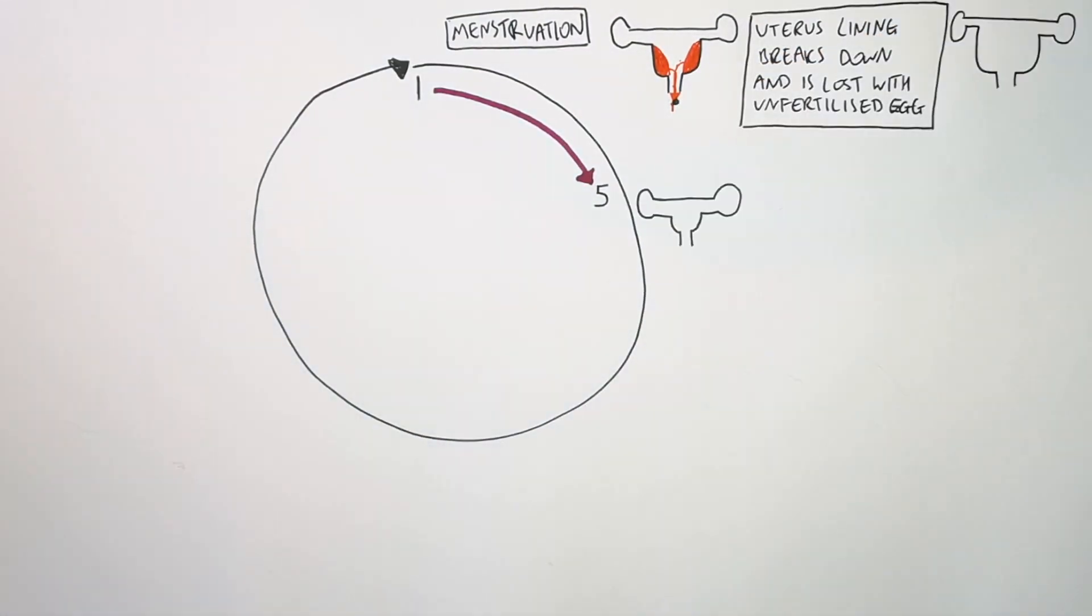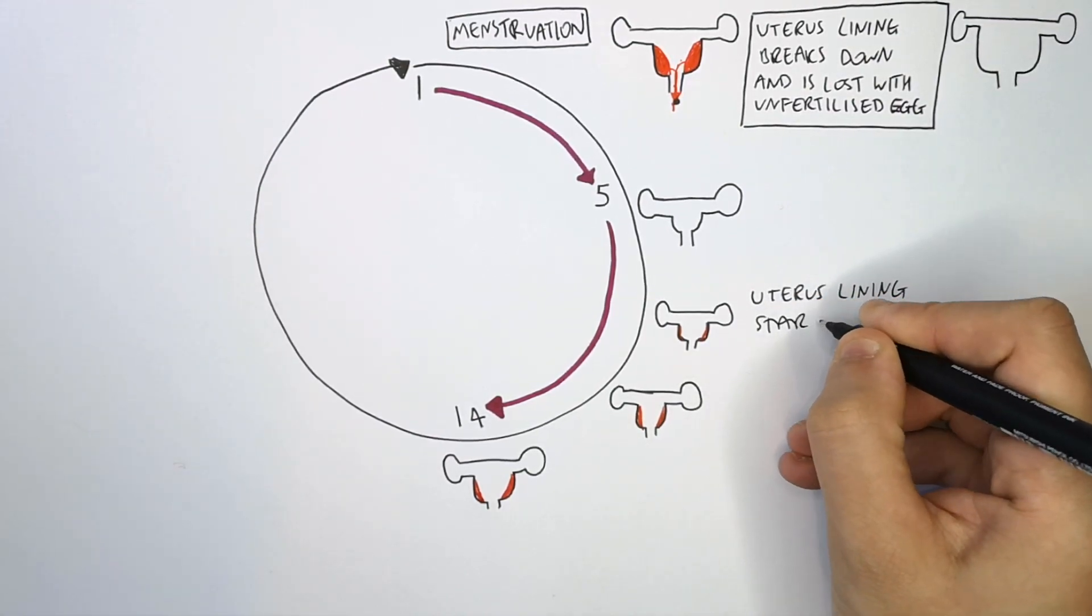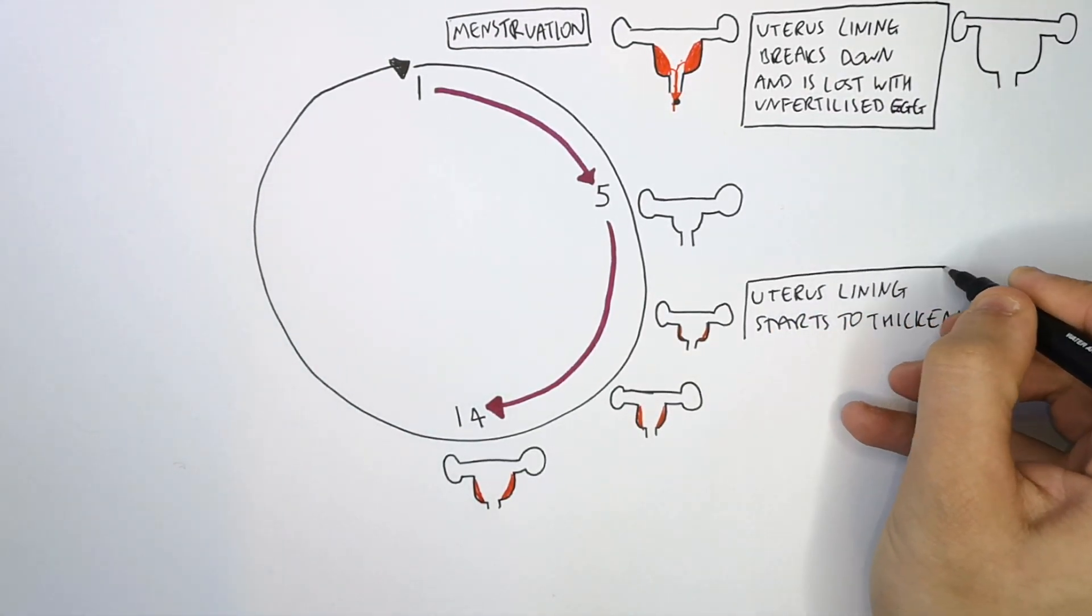During days 5 to 14, this is when the uterus lining starts to thicken. The blood lining in the uterus starts to thicken between days 5 and 14.